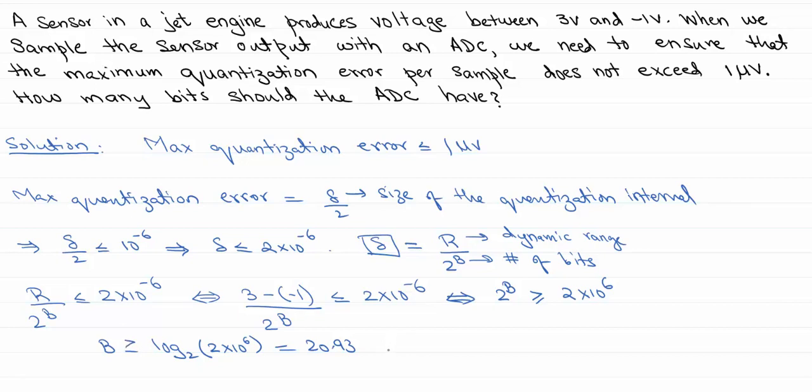So bits of course have to be an integer, so this means that we can just take the next largest integer, which is b equal to 21. So that is our solution. If we take 21 bits or more, our max quantization error in uniform quantization will be equal to or less than 1 microvolt.